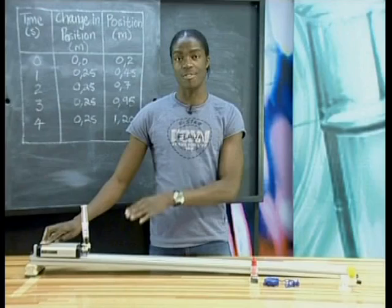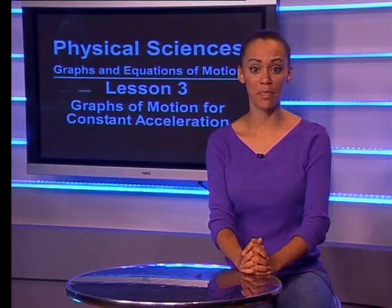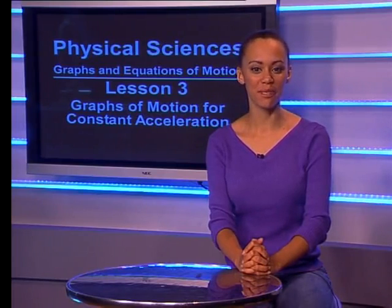Aaron has attached a syringe filled with ink to the front of the trolley. He allows ink drops to fall on the track at regular time intervals. If the trolley goes faster, the ink spots on the track are further apart. He will measure the distance between the spots to calculate the velocity of the trolley. Aaron wants to measure the change in position more frequently, so he has adjusted the dropper to drop the ink more often.